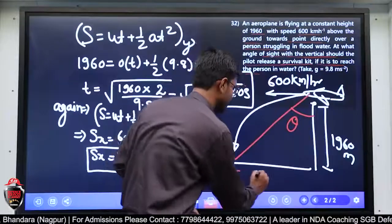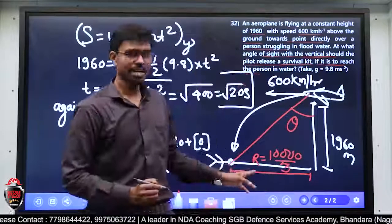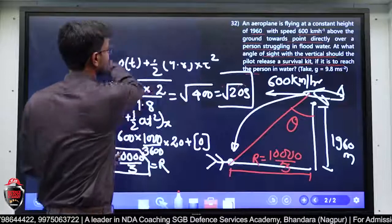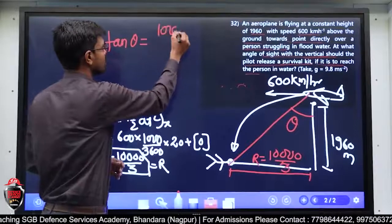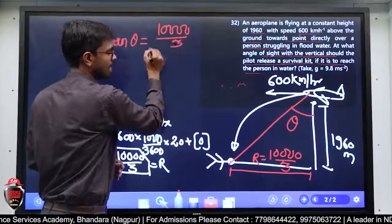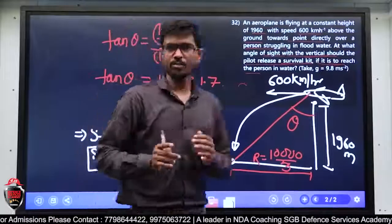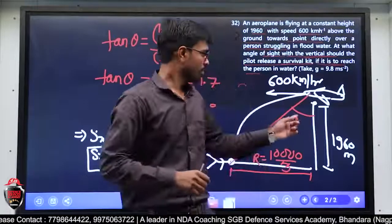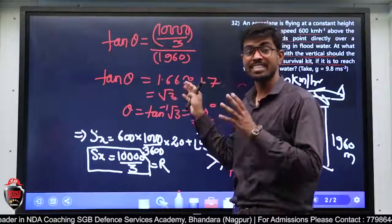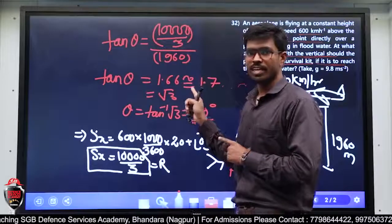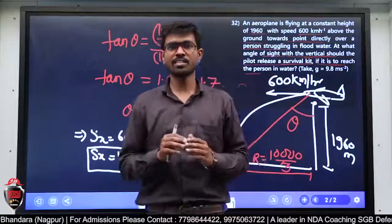यह distance r = 10,000/3 मिल गया। अब tan theta लगाया — tan theta = opposite/adjacent = (10,000/3) / 1960। Solve करने पर 1.66 मिला, which is nearly equal to 1.7 ≈ √3। और theta = tan⁻¹(√3) = 60 degree। तो angle of sight = 60 degree।